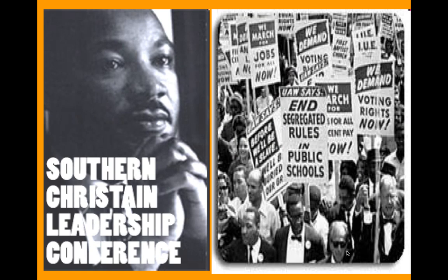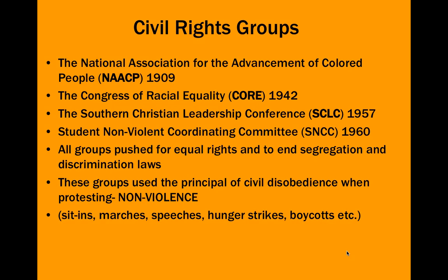We're going to see certain groups form, like the Southern Christian Leadership Conference. We already had the NAACP, who called for equality. During World War II, the Congress of Racial Equality — CORE — along with the Brotherhood of Sleeping Car Porters would strike against business owners not offering equality in the workplace, pay, or hours to minorities. In 1957, Martin Luther King Jr. forms the SCLC, or the Southern Christian Leadership Conference. Since 1960, we have SNCC, or the Student Nonviolent Coordinating Committee, which would be involved in sit-ins, freedom rides, and events in the 1960s. All groups pushed for equal rights to end segregation and discrimination laws.